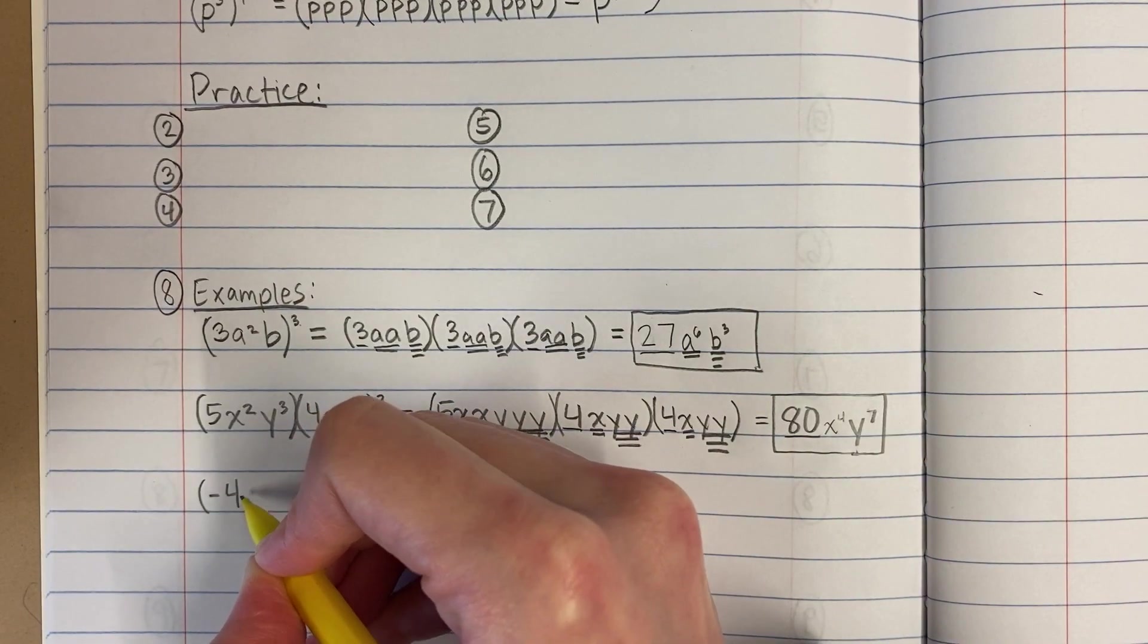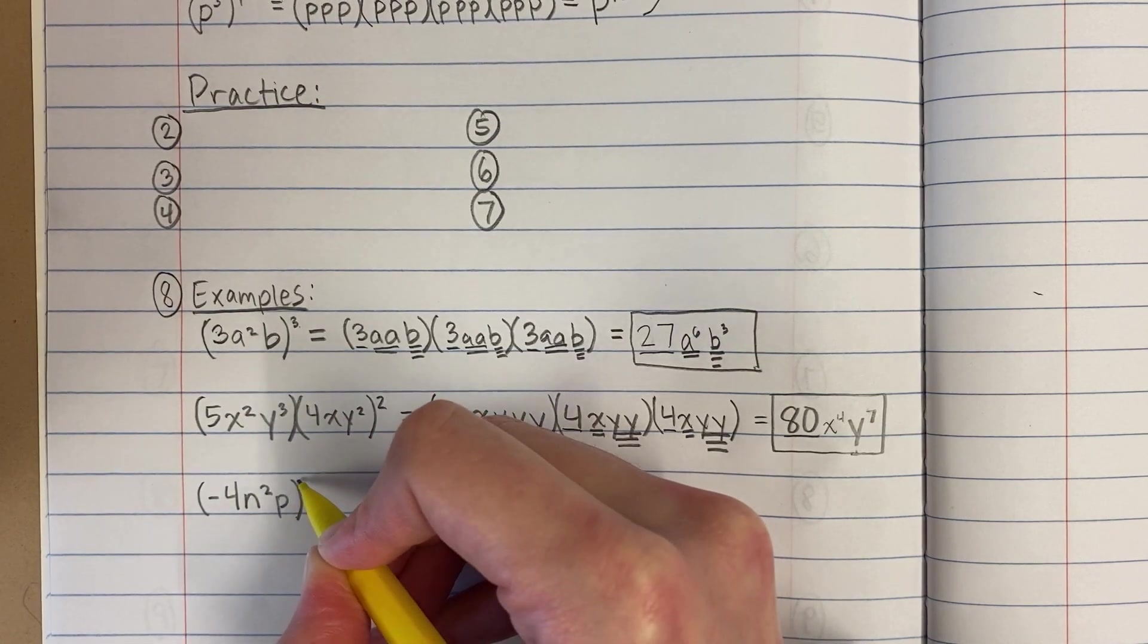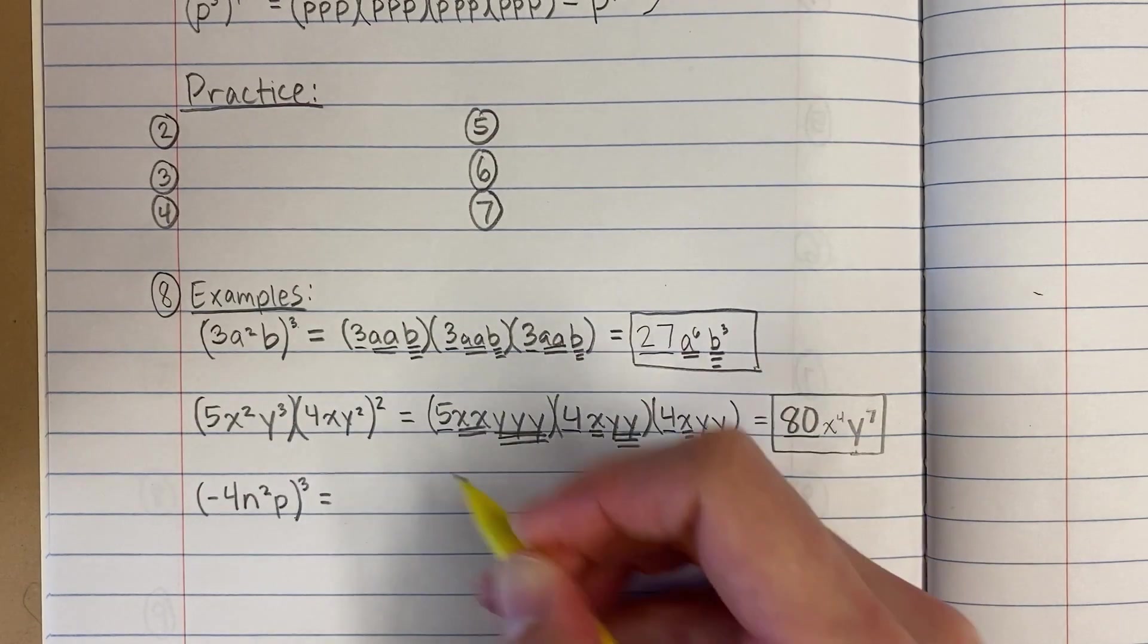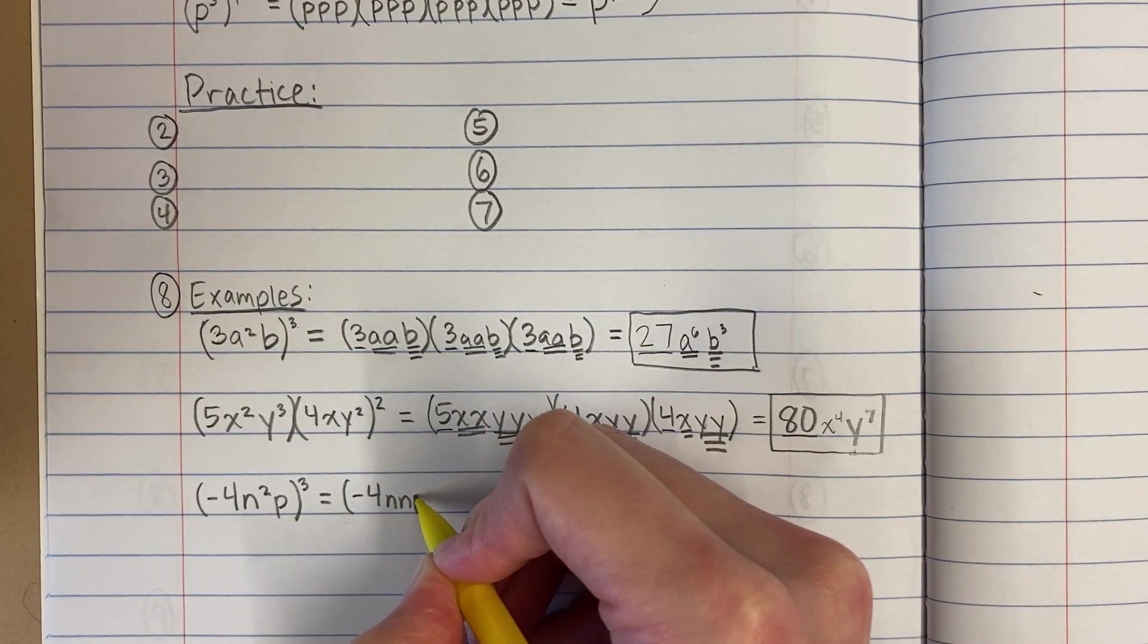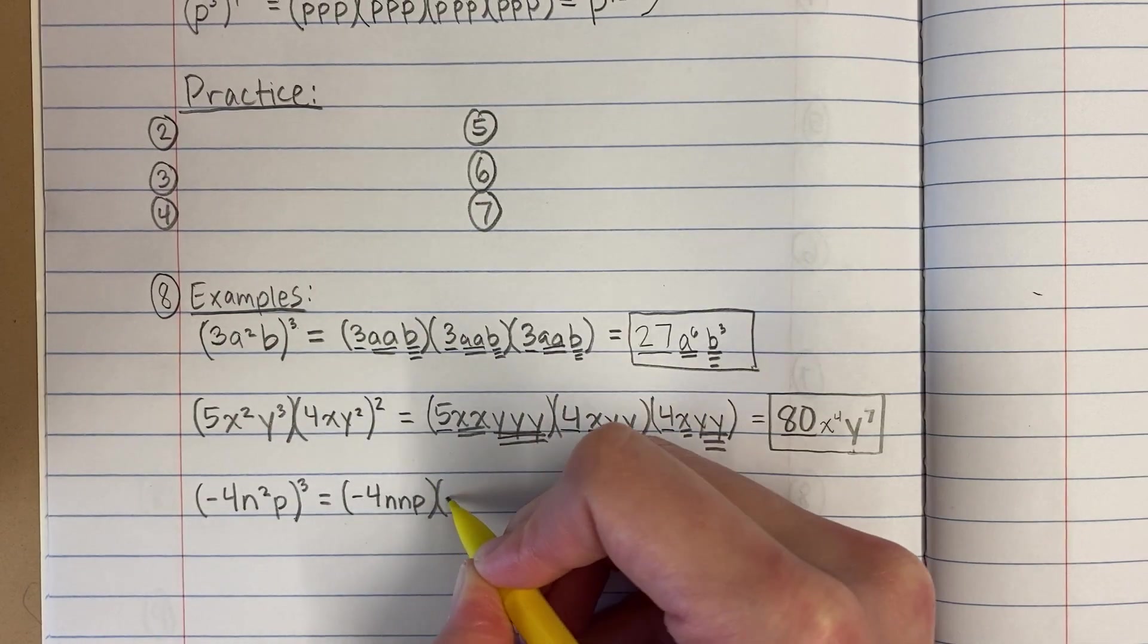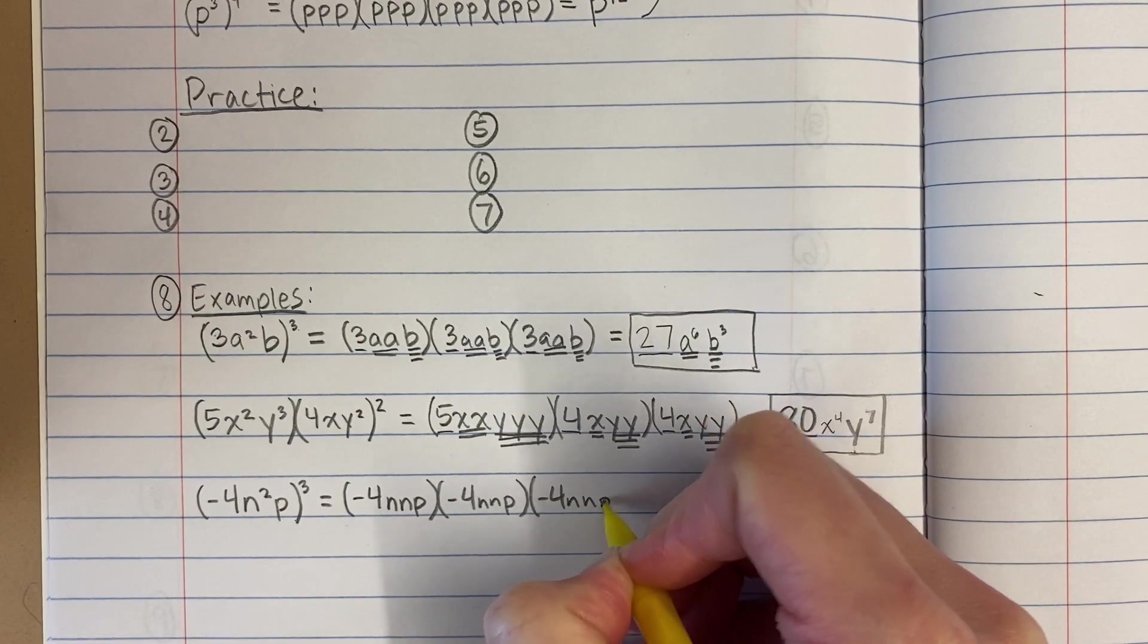Now here, what's tricky is I'm throwing a negative number in there. So we just have to remember what happens when we multiply a negative times a negative, right? So this is negative 4 times n times n times p to the 3rd power. So negative 4 times n times n times p, negative 4 times n times n times p.